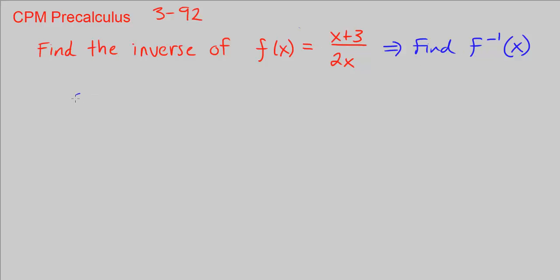Anyway, so what do we do? Step 1, we know how to do this, right? We want to go ahead and instead of f of x, we want to name our function y. So that becomes y is equal to x plus 3 over 2x.